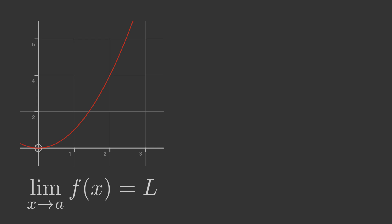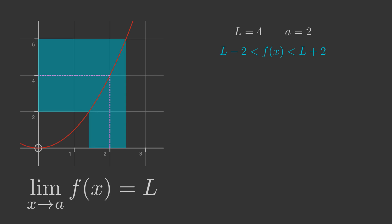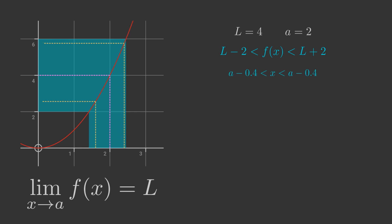In our x squared example, f has a limit of 4 when x approaches 2, so L is 4 and a is 2. The definition means we can make f as close to 4 as we wish, provided we choose x close enough to 2. Say we would like f to be in the range 4 plus or minus 2, that is between 2 and 6. We can shade this region. The range of permitted x values is roughly between 1.4 and 2.5. It is clear from the graph that if x is within the range 2 plus or minus 0.4, then f of x will be within the range 4 plus or minus 2.